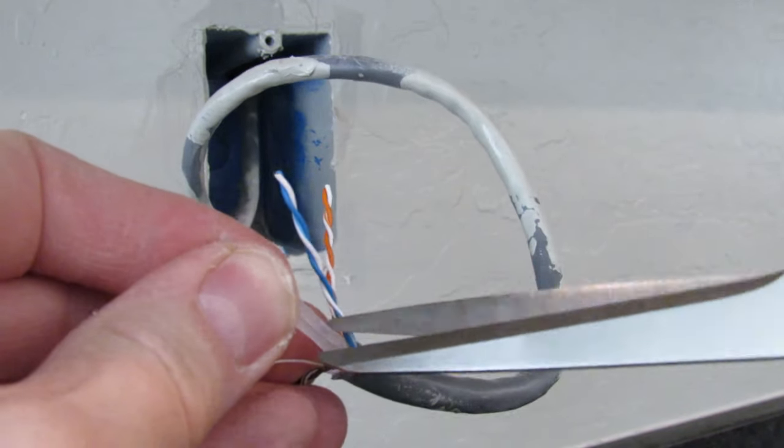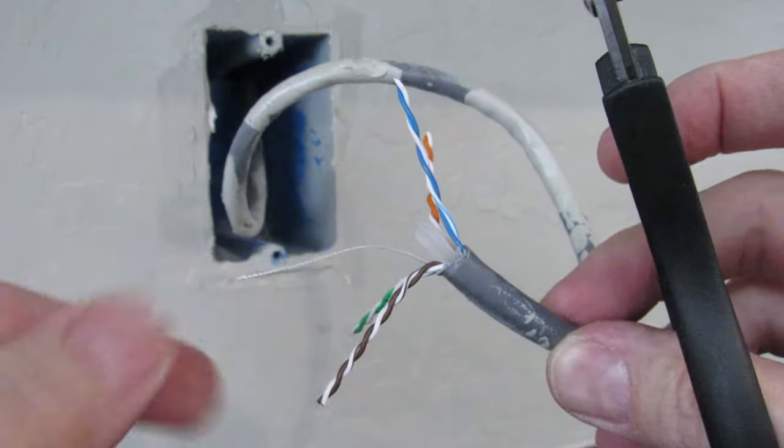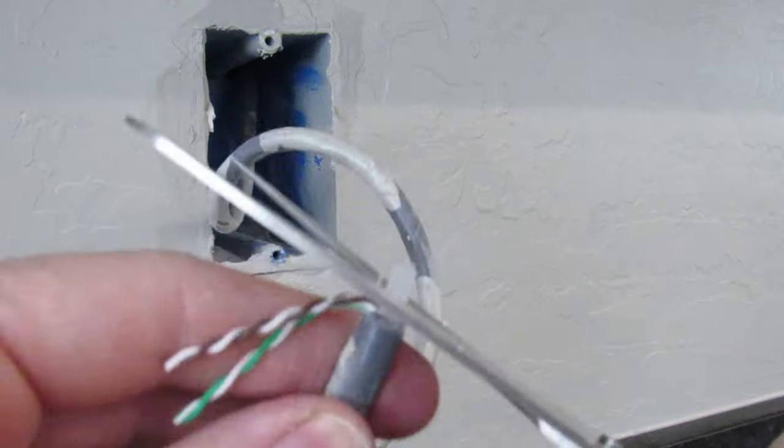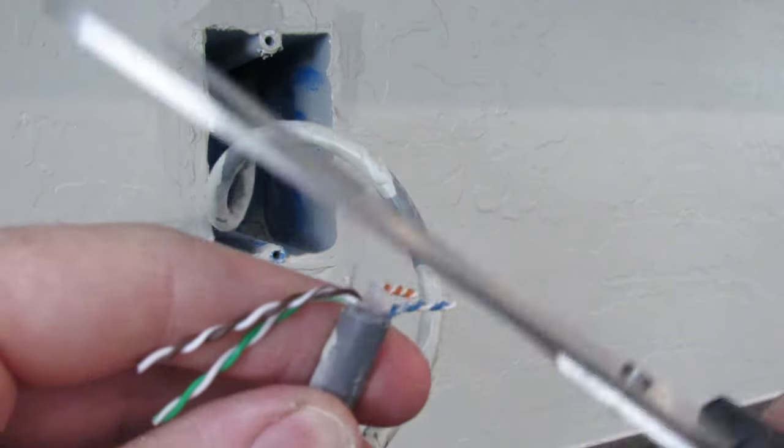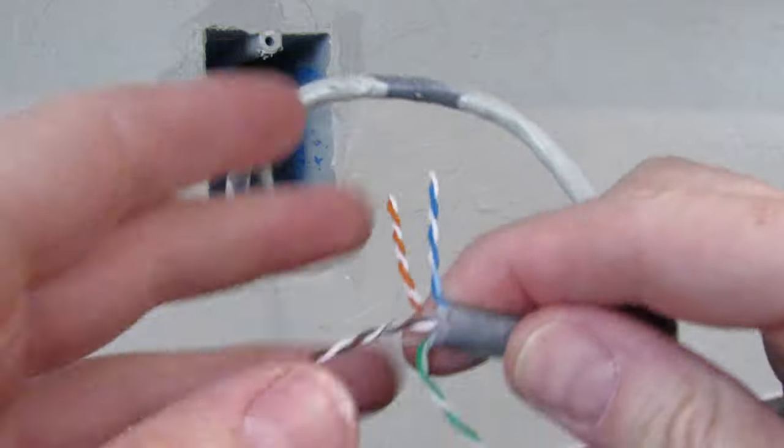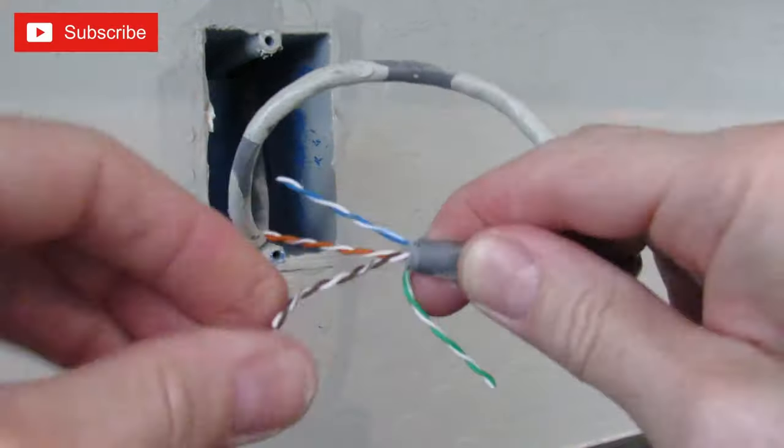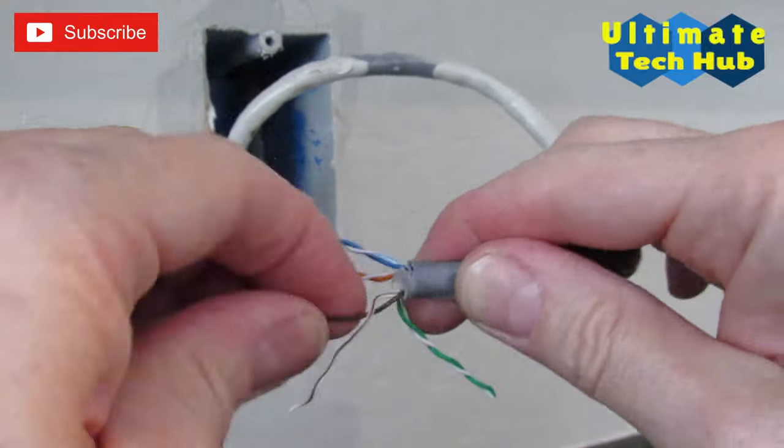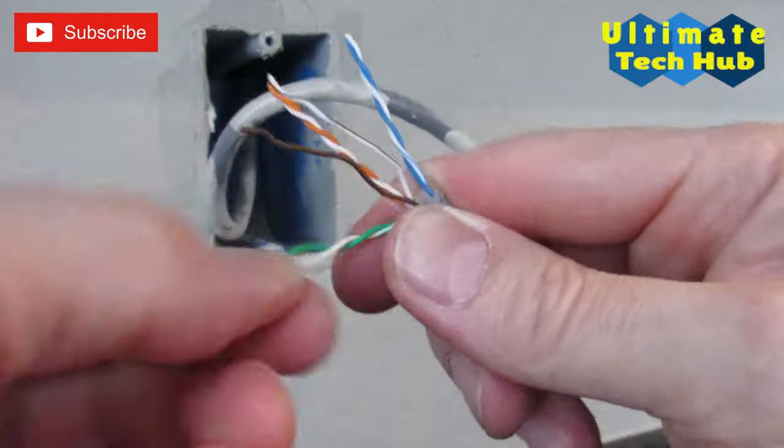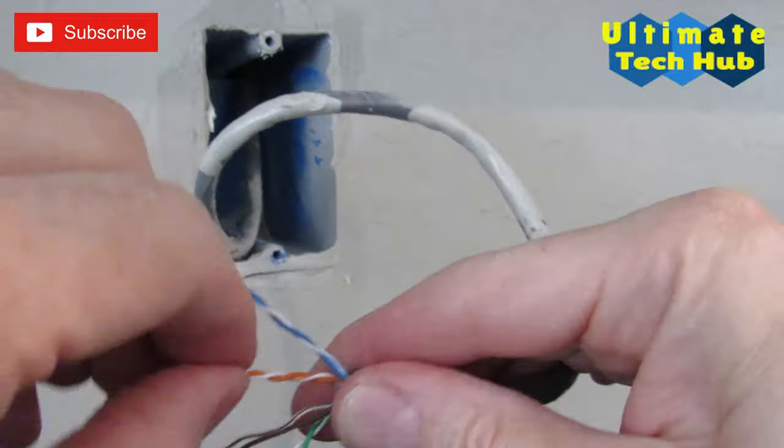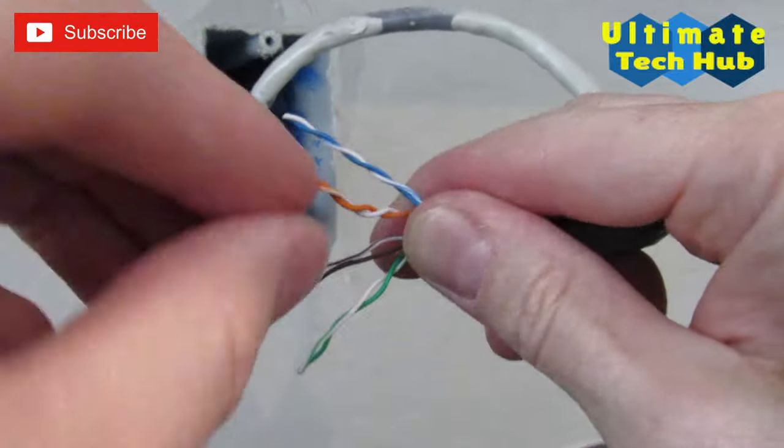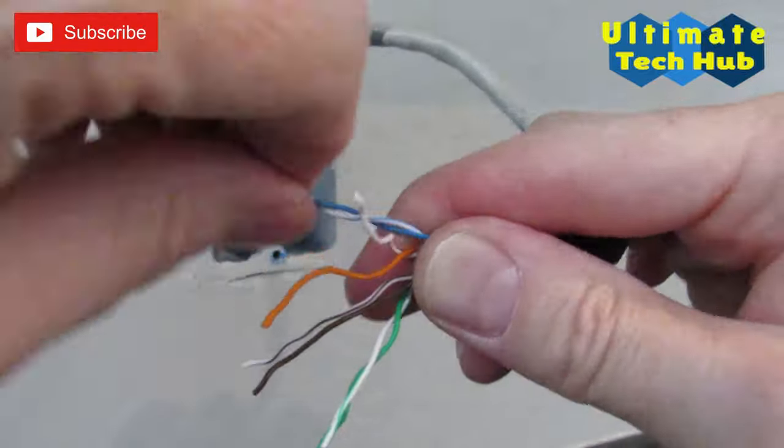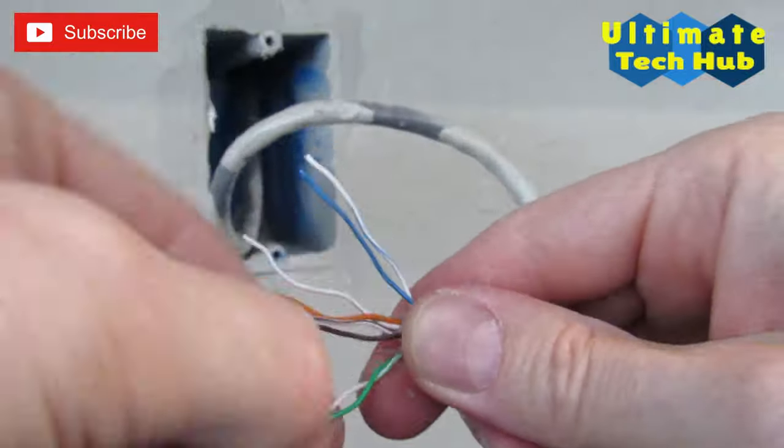Next you're going to cut back that inner core and the string and make sure you cut it back all the way as far as possible, so it's not in the way while you're installing the wires into the jack. Next unwind all the wires. Now Cat6 wires are a little more stiff than Cat5e so it takes a little longer to unwind these wires. Okay, we're all done.